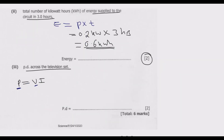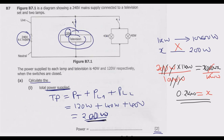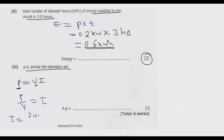To find the current for the entire circuit: current equals power divided by voltage. We know the total power is 200 watts and the voltage is 240 volts. So we have 200 divided by 240. Simplifying: 4 into 20 is 5, and 4 into 24 is 6, giving us a current of 5/6 amperes.